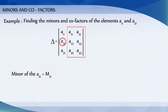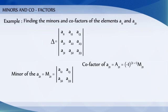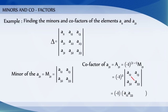The minor of element a21 is the determinant obtained by deleting the second row and first column. Therefore, M21 equals the determinant of a12, a13, a32, a33. The cofactor of a21 is A21, equal to minus 1 whole to the power 2 plus 1, into M21. That is minus 1 times the quantity a12 times a33 minus a13 times a32, which equals minus a12 times a33 plus a13 times a32.